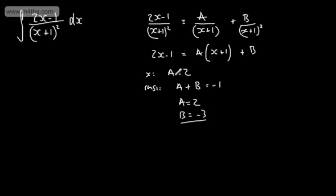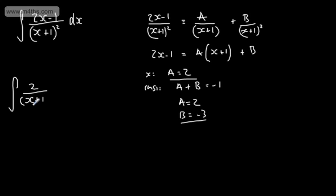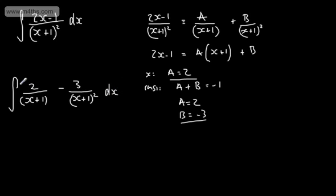You can solve these any way you like — you could set x to be minus 1. But essentially what we're looking for now is the integral of 2 over (x plus 1) minus 3 over (x plus 1) squared, integrated with respect to x. As you can see, it doesn't always give us a log function.